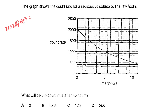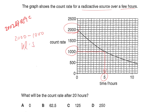This video is on half-life and covers 10 different questions. In Question 1, you are given a count rate against time graph of a radioactive source. Because the question doesn't mention background radiation, you can assume it has been taken out — the count rate is purely from the radioactive source. With an initial count rate of 2,000, after one half-life it drops to 1,000. Reading from the graph, the half-life is 5 hours.